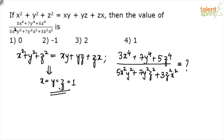In fact, 2 also satisfies, and 3 also satisfies — there are infinite values basically. When x = y = z, then x² + y² + z² equals xy + yz + zx because wherever we have y or z, we can replace with x. So both sides become 3x². The whole idea is to take x = y = z from this given equation.